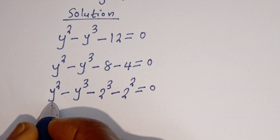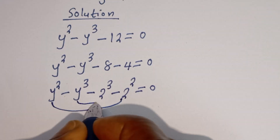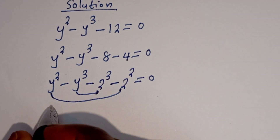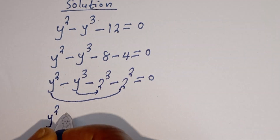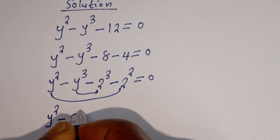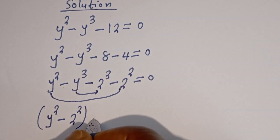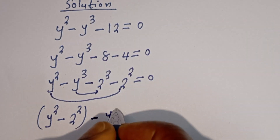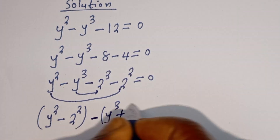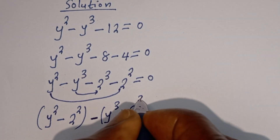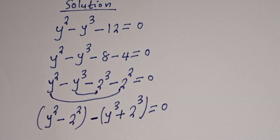Let's compare and regroup. We have y squared minus 2 squared, then minus y to the power of 3 plus 2 to the power of 3, is equal to 0.